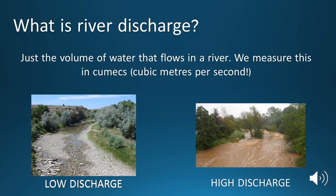Whereas on the right hand side we can clearly see that this river is actually in flood. We can see there's a very high discharge. There's a lot of water flowing through this river. So therefore you would expect there to be a high number of cubic metres flowing past a given point every second.